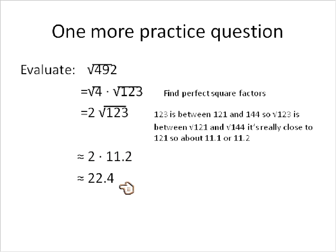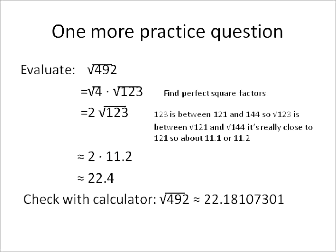So we'll go ahead and say it's about 11.2. And when we multiply that together, 2 times 11.2 is 22.4. We can use the calculator and find that it's actually 22.1810. So we were pretty close, 22.4, 22.1. It was pretty close. If we'd used 11.1, it would have been a little bit closer, but you know what? This is estimating.